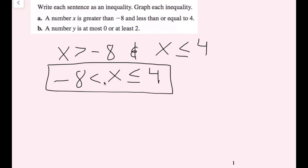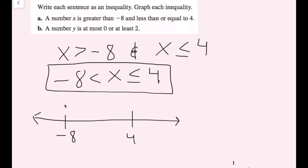To graph this, I make my number line with negative 8 and 4. Between negative 8 and X there's no 'equal to', so that's an open circle. At 4 it is equal to, so it's a closed circle. I want all values larger than negative 8 up to and including 4, so the shading goes between them. That is how we write and graph the inequality for part A.